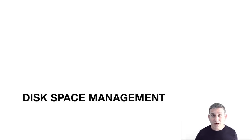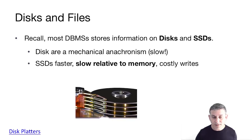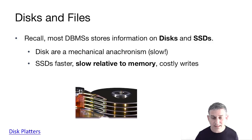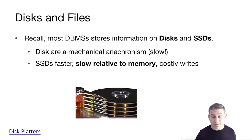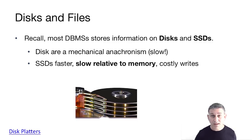Now moving ahead, let's talk about the lowest component in our architecture: disk space management. Most database systems store information on disks and SSDs. Disks are a mechanical anachronism — they're very, very slow, like going to Pluto. SSDs are faster, but still slow relative to memory, and they have costly writes that are more in the order of magnetic disks than RAM.